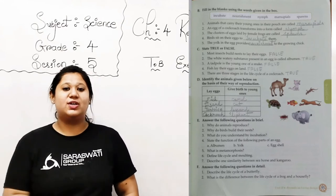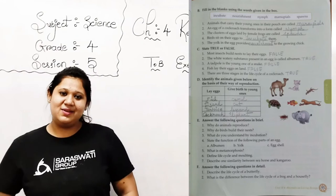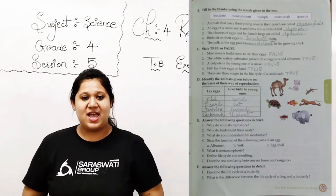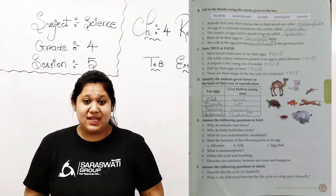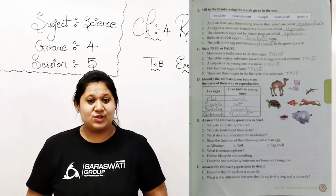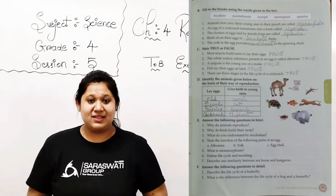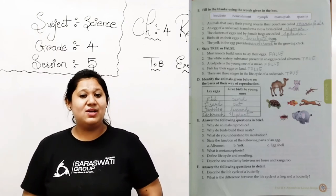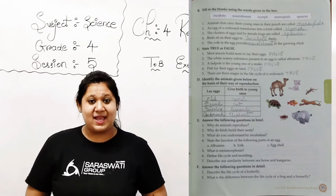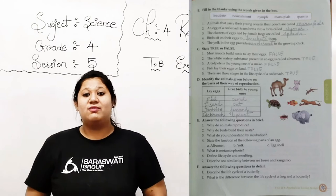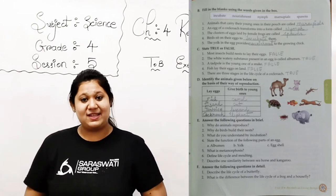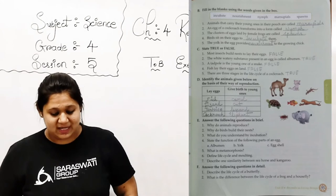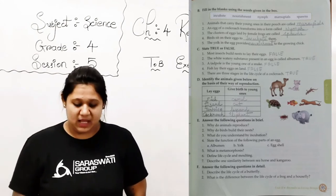So now let's begin question number 5, answer the following questions in brief. Number 1: why do animals reproduce? Animals reproduce because living beings reproduce to produce more of their offspring. This ensures the continuity of life on this earth, right? We are already surviving on earth, right? So to continue life, we all living things need to reproduce. Otherwise, if we won't be able to reproduce, then what will happen? One day the whole world will end, nobody is there to continue our life on this earth. We need to reproduce. Clear?